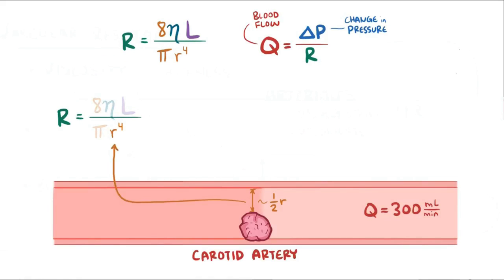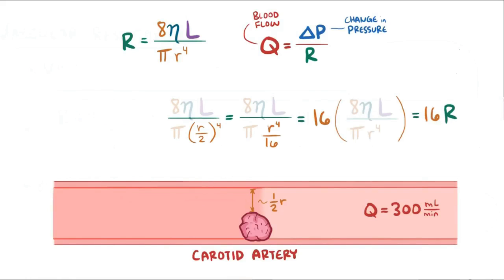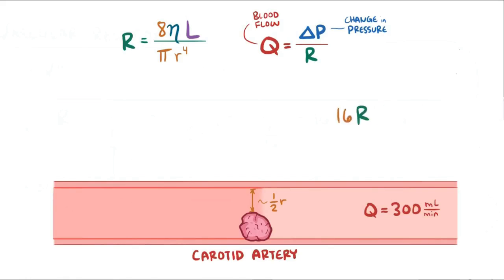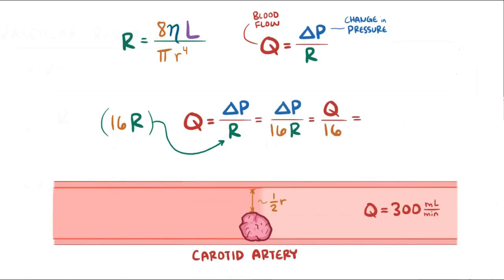Well, a 50% blockage means that the radius is now one-half of what it was, and looking at our equation, since nothing else has changed, plugging in one-half R for the original R, we get one-half R to the fourth power, or one-sixteenth R to the fourth, meaning resistance goes up by 16 times. Assuming that blood pressure doesn't change right away, subbing in this new 16 times greater resistance, we see that the blood flow drops by 16 times, from 300 milliliters per minute to 300 over 16 which is equal to 19 milliliters per minute, which is a huge drop for just halving the radius.